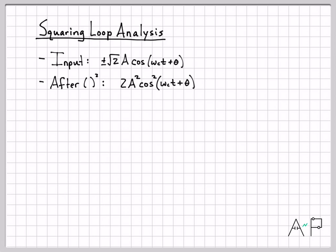If we square that, we'll get 2A squared cosine squared. And then I can use a trig identity, right? Cosine squared is one half times the quantity 1 plus cosine of twice the argument. So the one half and the 2 cancel, and then cosine of twice the argument. So this will be the output of the squaring operation.